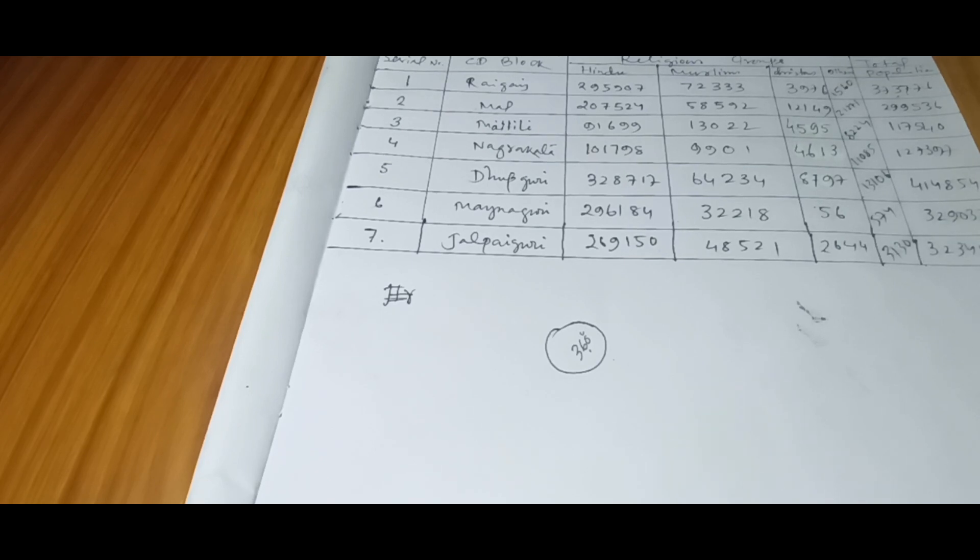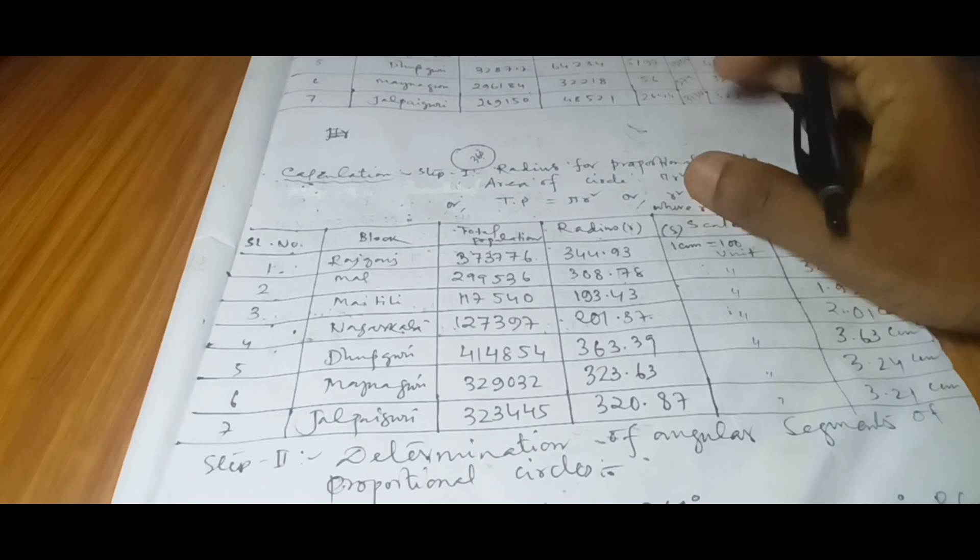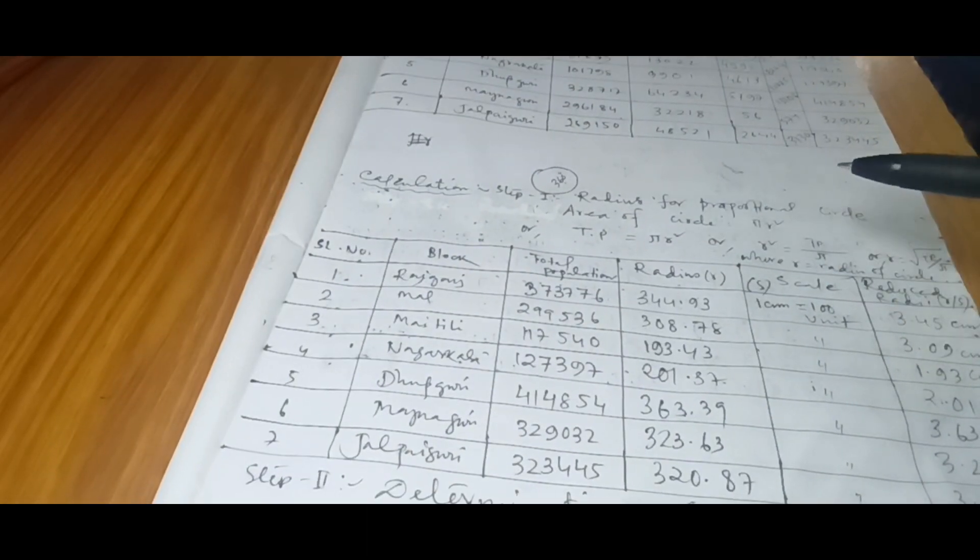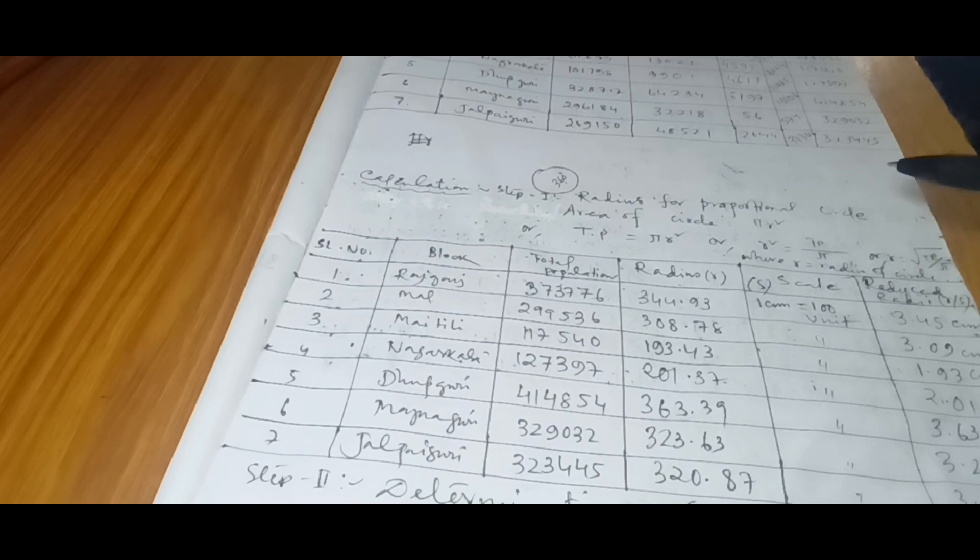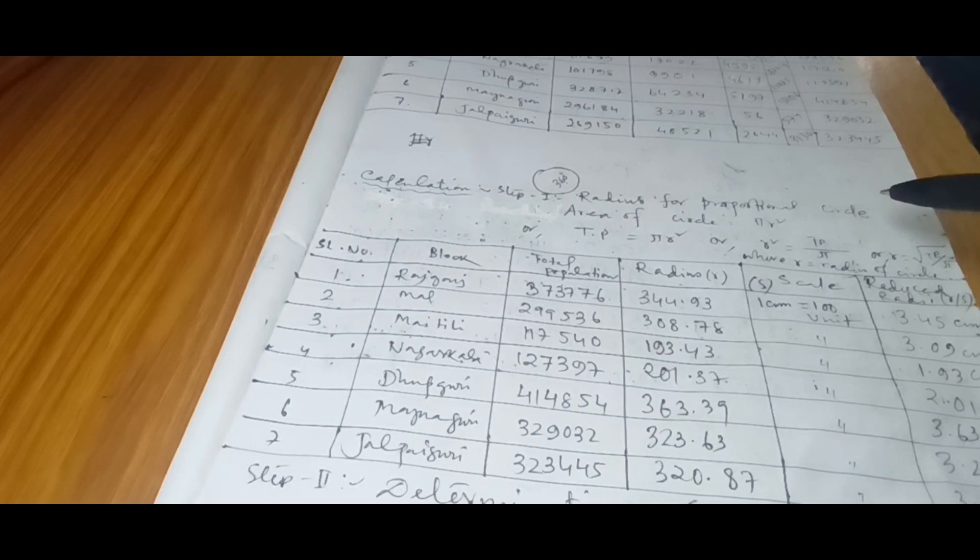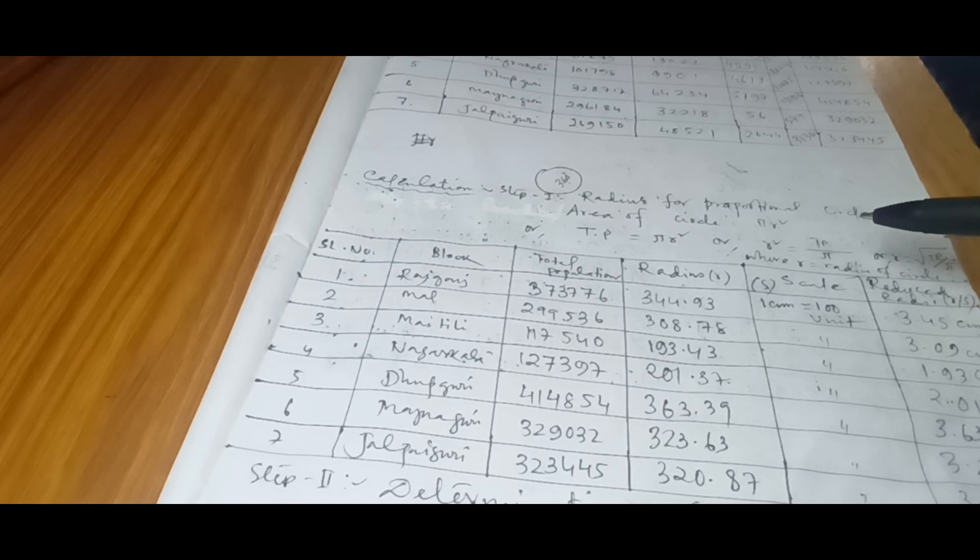So after calculating, I got these two tables. The calculation goes like this: Step one, radius for proportional circle. Area of circle, we know it is πr², and I have said that the area resembles the total population. So if I write in this way: total population = πr², then I can easily get r².